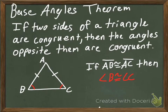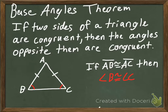We have a Base Angles Theorem. It says that if two sides of a triangle are congruent, then the angles opposite them are congruent. So if we have a triangle and we know that two of the sides are congruent, then we can say those angles opposite them are also congruent. So in this picture, if AB is congruent to AC, then we can say that angle B is congruent to angle C.